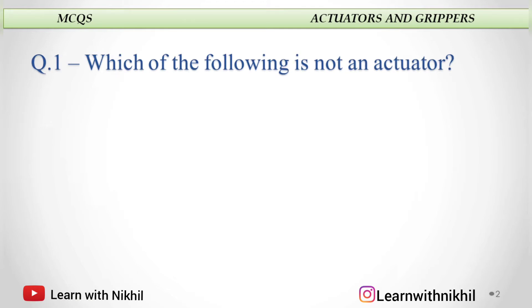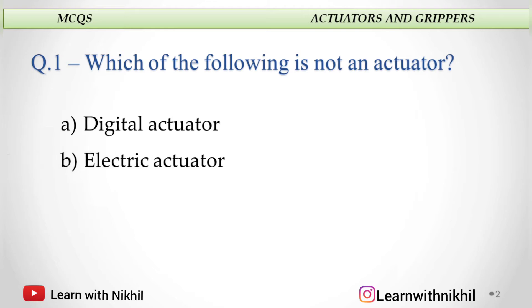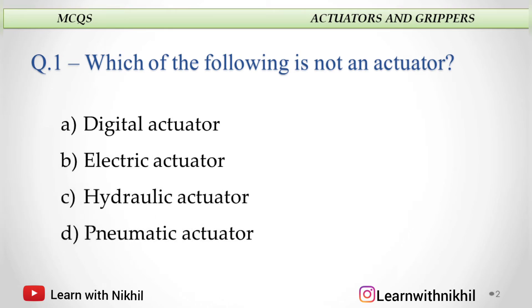Which of the following is not an actuator? A. Digital actuator, B. Electrical actuator, C. Hydraulic actuator, or D. Pneumatic actuator? And the answer is digital actuator.